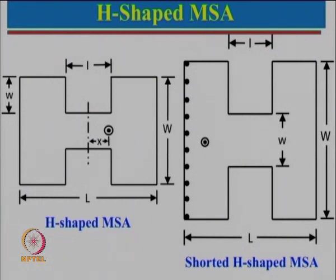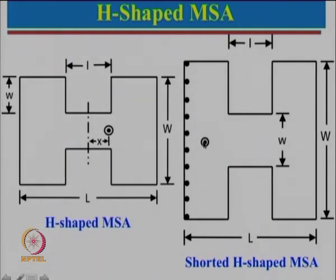Two configurations are possible: short the entire symmetrical axis to get a T-shaped shorted microstrip antenna, or short the entire outer edge to get a shorted H-shaped microstrip antenna, feeding at the appropriate point for impedance matching. One can also use a single shorting post instead of shorting the entire edge, which increases the effective path length so the total path equals lambda by 4, achieving further compactness.